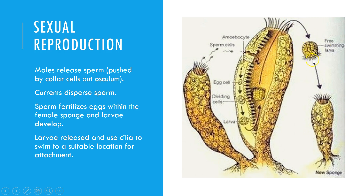The larvae are free-swimming because tiny projections called cilia allow the larval sponge — the baby sponge — to swim and find a place to attach. Once it finds a place to attach, it will grow into something that looks more like the adult sponge it came from, and eventually it will grow into an adult sponge and can repeat the process.